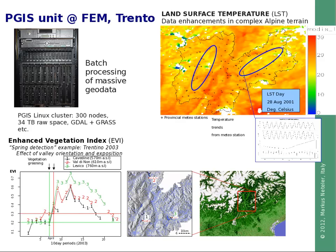Our work group, the GIS and Remote Sensing Unit at the Foundation at Edmund Mach, specializes in processing massive amounts of geospatial data. Luckily, large amounts of US satellite data are freely available, though European data sources exist but are much more difficult to obtain. An interesting sensor is MODIS, flown on the Aqua and Terra satellites, from which several products are delivered — about 40 different products available online.